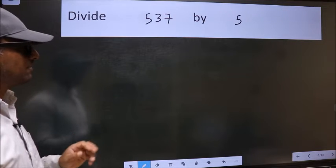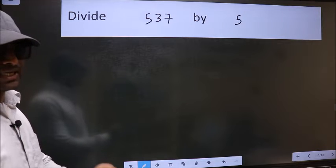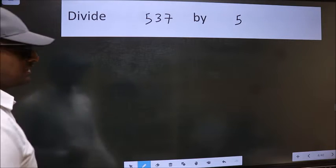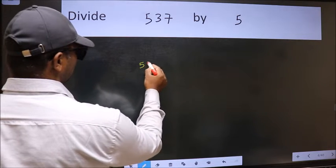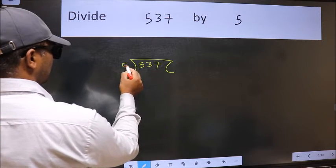Divide 537 by 5. To do this division, we should frame it in this way: 537 here and 5 here.